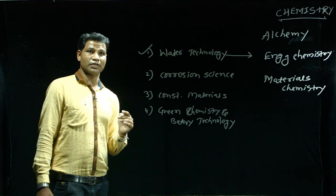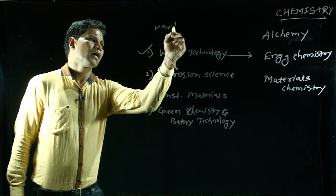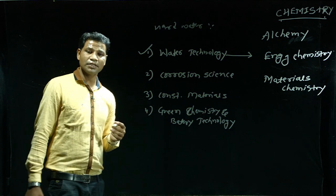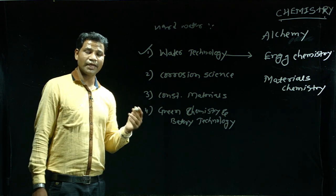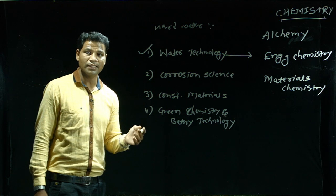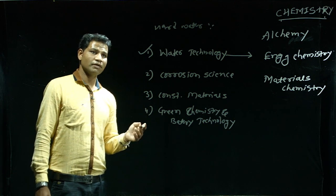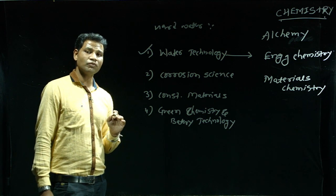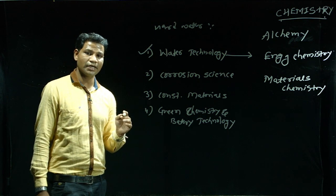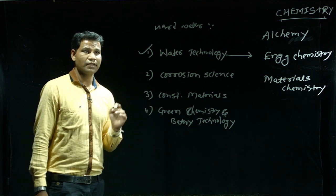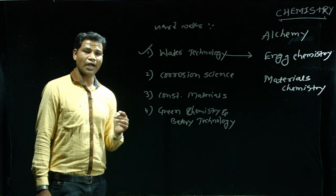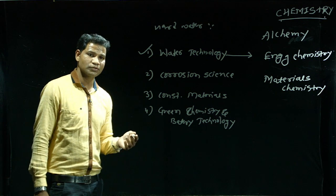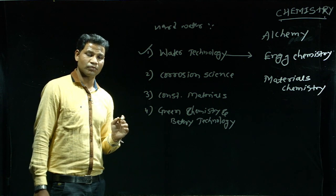Hard water is the water which, when reacted with soap solution, does not form lather easily — this is called hard water, and it is due to the presence of calcium and magnesium salts. Soft water is the water which, when treated with soap solution, forms lather easily. Hardness of water is the property which is due to the presence of calcium and magnesium salts that prevent lather formation with soap solution.